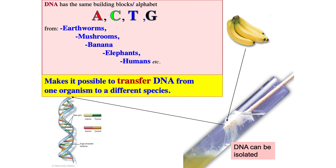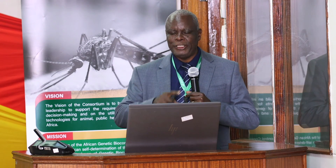To understand the genesis of biotechnology, I'd like to take you back to Biology 101, which starts with what DNA is. DNA is the building block of all organisms — whether you are talking about insects, plants, or animals. The composition of DNA has the same alphabet across all organisms: ACTG. Our written alphabet has 26 letters; in DNA we only have those four.